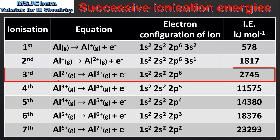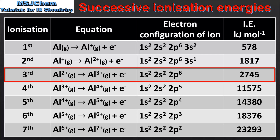For the third ionization we start with 1 mol of gaseous 2+ ions and remove 1 mol of electrons to form 1 mol of gaseous 3+ ions. If we look at the electron configuration we can see that we've lost the last remaining electron in the 3s sub-level, and the ionization energy is 2745 kJ per mol.